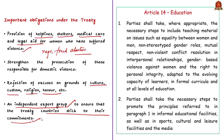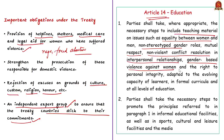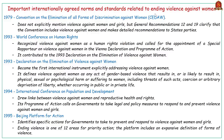The provision based on which Poland has decided to withdraw is Article 14 of the convention, which mandates parties to include teaching material on gender equality. This includes teaching material on equality between women and men, non-stereotyped gender roles, mutual respect, non-violent conflict resolution and interpersonal relationships, gender-based violence against women, and the right to personal dignity. All of these must be included in formal curriculum at all levels of education. These are progressive steps for achieving gender equality and empowering women, but unfortunately Poland has decided to take a regressive step.